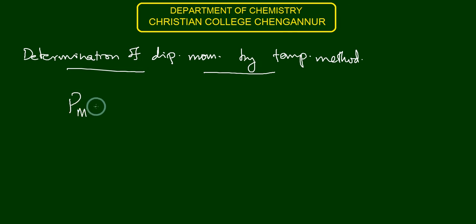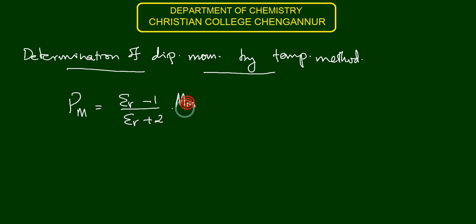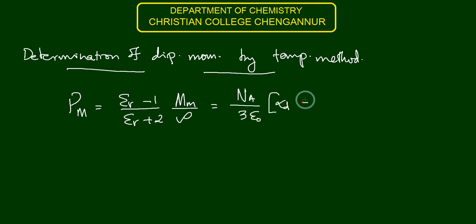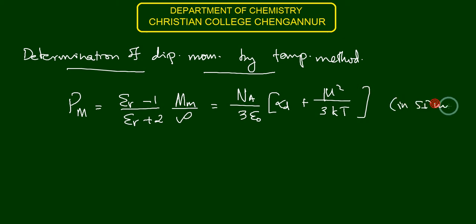From the Debye equation, the molar polarization Pm is equal to (εr minus 1) divided by (εr plus 2), into Vm, or we can write Mm divided by ρ. That equals Na divided by 3ε₀ into (αd plus μ² divided by 3kT). This is in SI units.